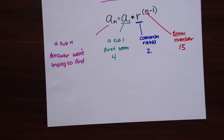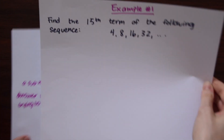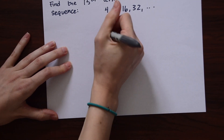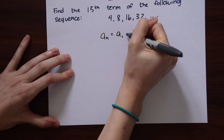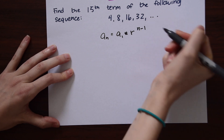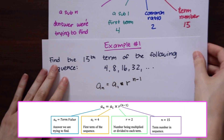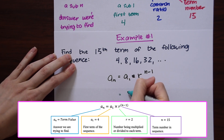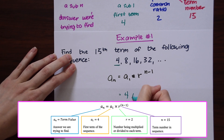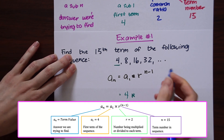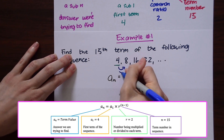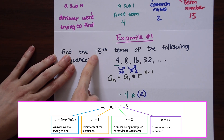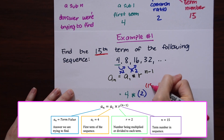Now that we have all our numbers, we can answer that first example and find the 15th term of our original sequence: 4, 8, 16, 32. Let's write out our formula again: a sub n is equal to a sub 1 times r raised to the n minus 1. Now we fill in the values — the first term is 4, the common ratio is 2 because we're multiplying each term times 2, and n is 15 because we want to know the 15th term. So this is really 15 minus 1.